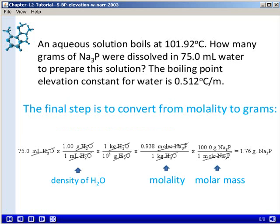So we'll start with our 75.0 milliliters of water. Use the density of water to convert this to grams. We will then convert grams to kilograms so that we can use the molality as a conversion factor. Remember, molality is moles of solute, which is sodium phosphide, per kilograms of solvent, in this case water. So once we have kilograms of water, we can use the molality to find moles of sodium phosphide. The very last step is to find the molar mass of sodium phosphide, about 100 grams, to convert moles of sodium phosphide to grams of sodium phosphide.